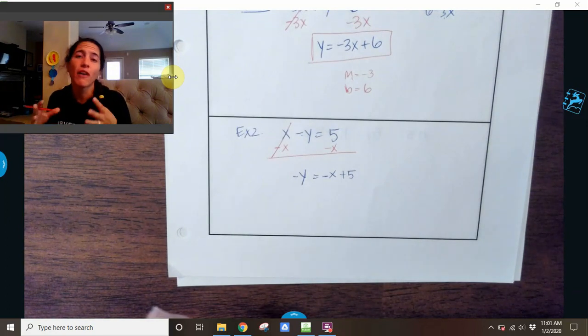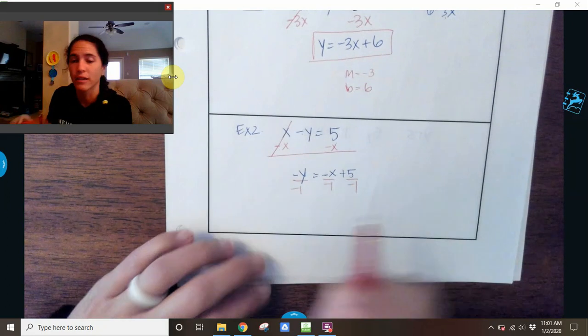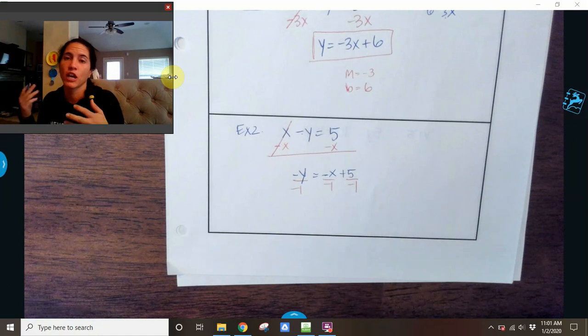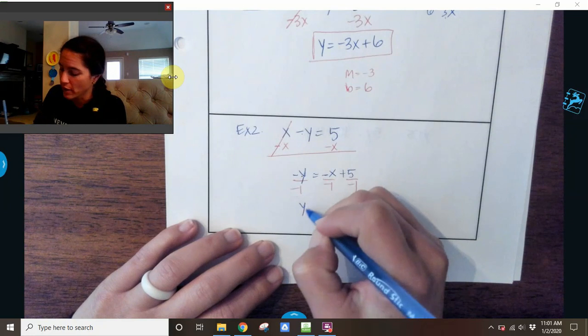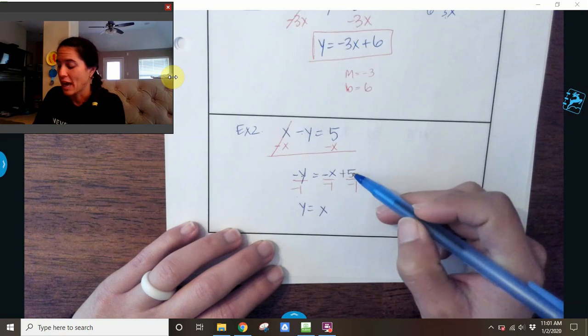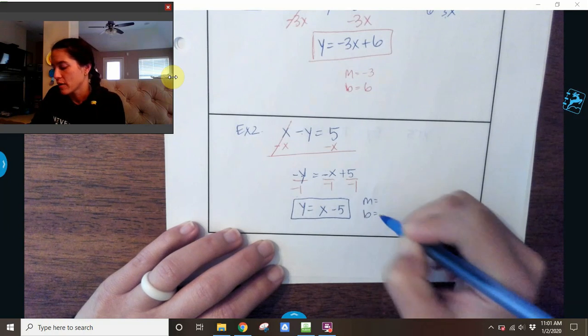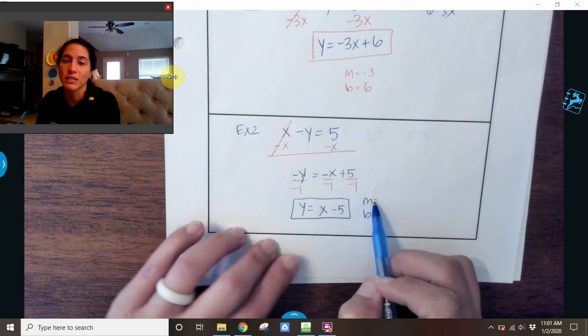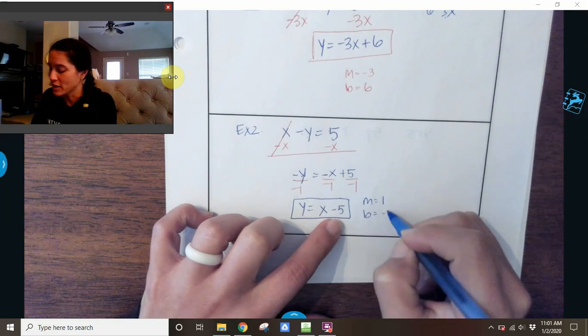I need to get the Y by itself. Right now, it's a negative Y. So you have one or two options: you can divide by negative 1, or you can multiply by negative 1. I'm just going to divide by negative 1. And when you divide by negative 1, all the signs are going to switch from being positive to negative or negative to positive. So negative Y divided by negative 1 is a positive Y. Negative 1X divided by negative 1 is a positive X. And positive 5 divided by negative 1 is a negative 5. So again, my negatives change to positive, and my 1 positive 5 change to a negative. So my slope, what number is in front of the X right here? My slope is a 1, which means 1 over 1, and my Y intercept is negative 5.